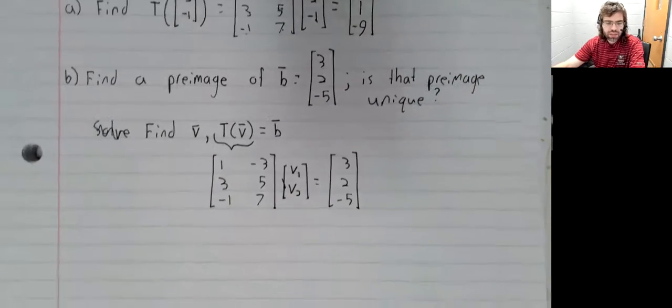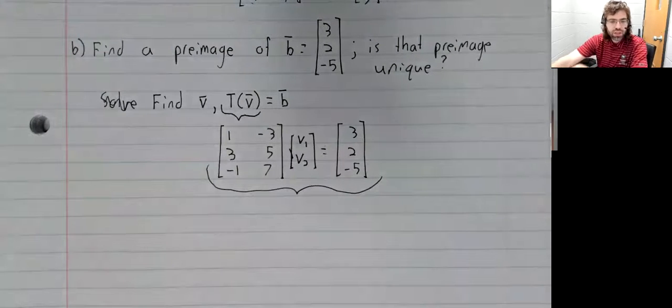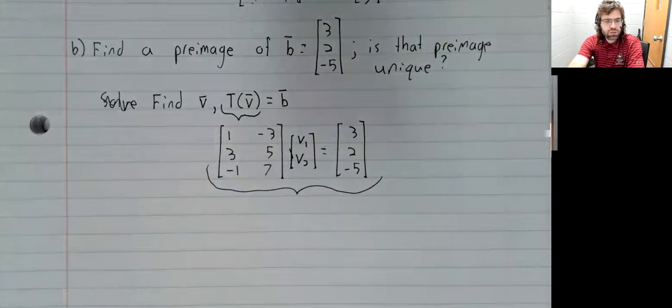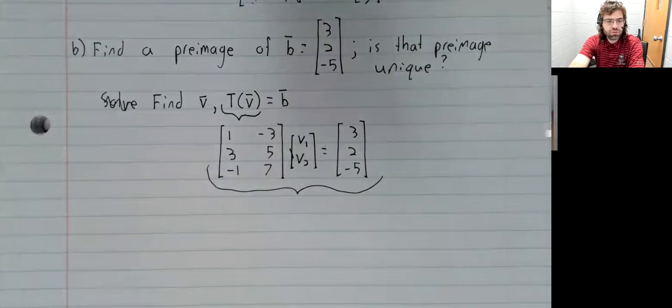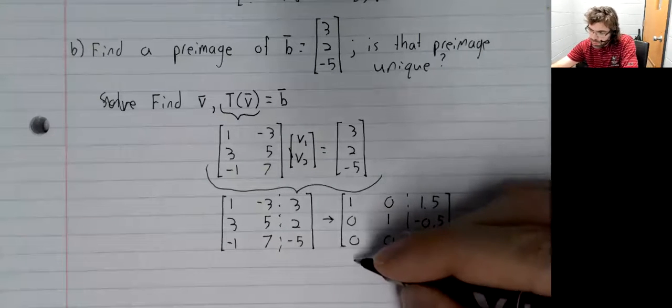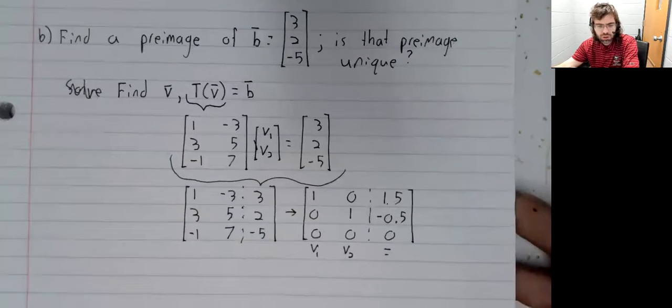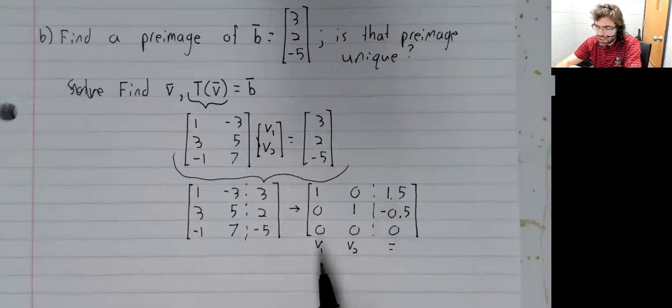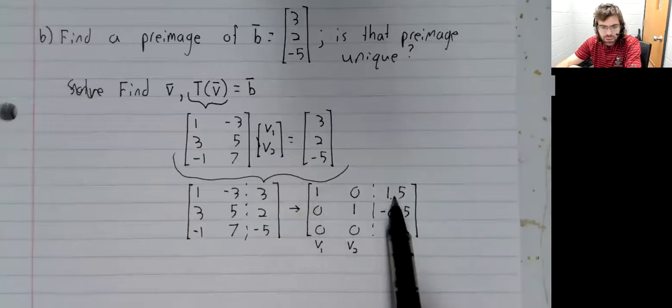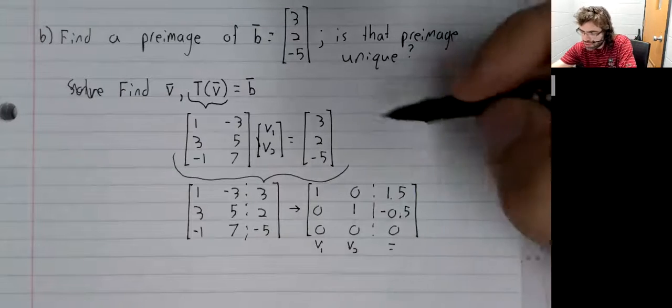We're therefore being asked to solve a matrix equation. We use Gauss-Jordan elimination on this augmented matrix. The columns here correspond to variables.